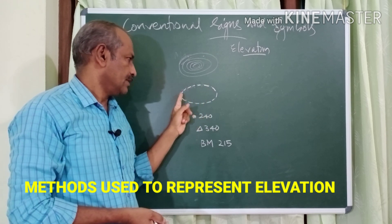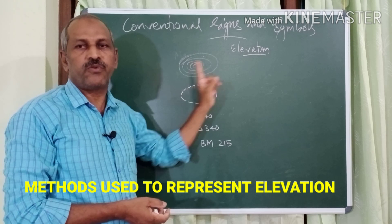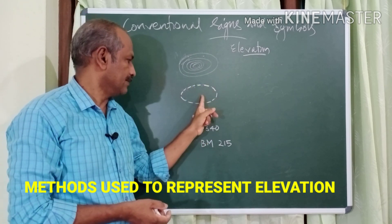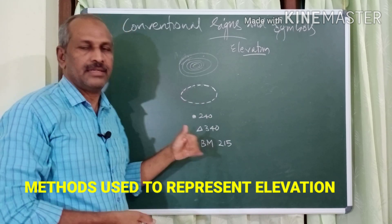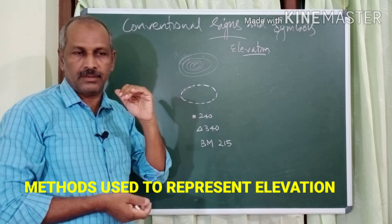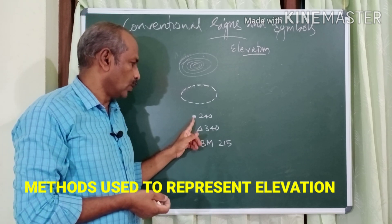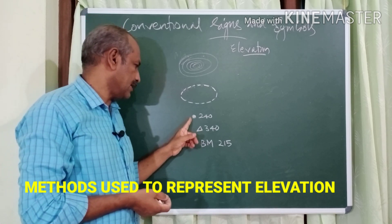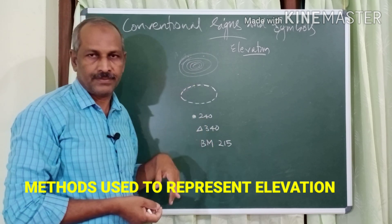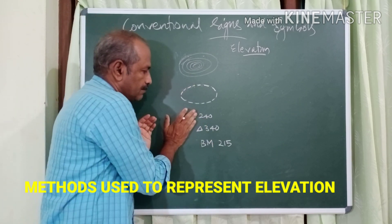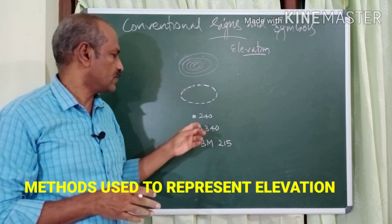A broken circular line in brown color represents a form line. A black dot with a number written next to it represents spot height — the actual height of a place. Sometimes the number is written without a black dot, also indicating spot height.